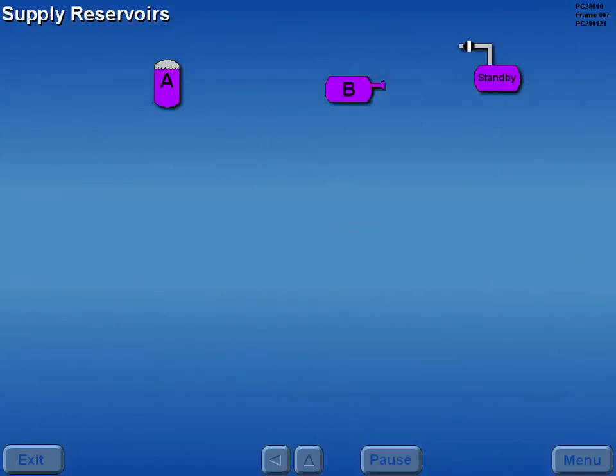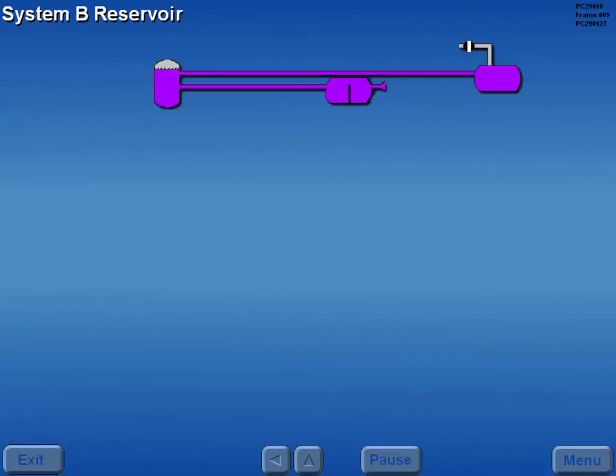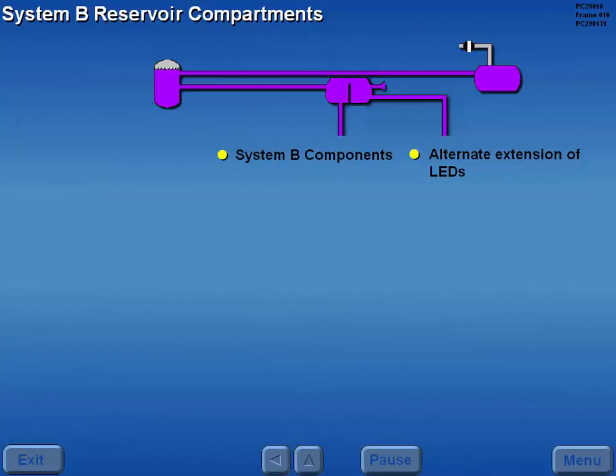Each system has its own supply reservoir. Although the systems operate independently, the reservoirs are interconnected. The System B reservoir is divided by a baffle at the 1.1 gallon level. The compartments are labeled System B and Baffle B. The fluid in the Baffle B compartment is used for the alternate extension of the leading edge devices, and the System B compartment supplies the System B components.